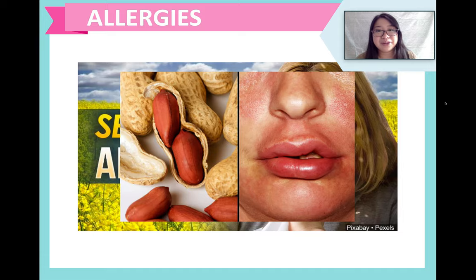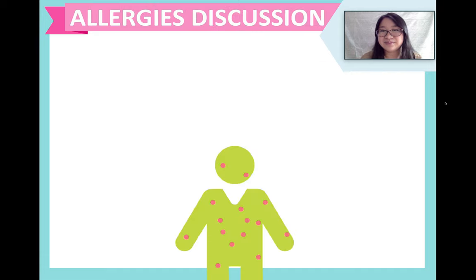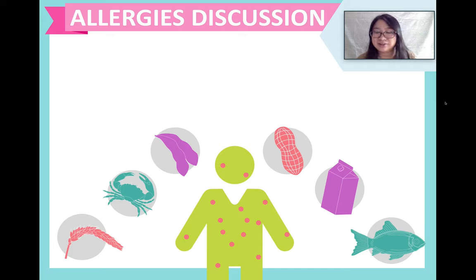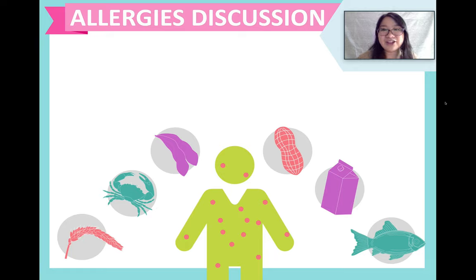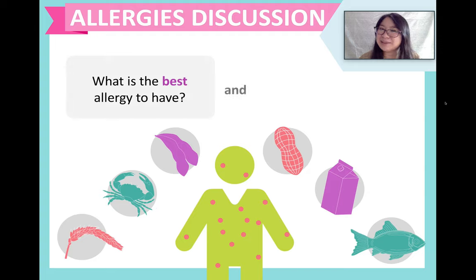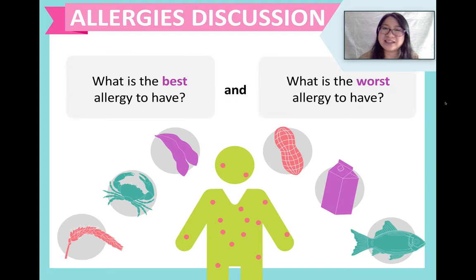For some people, a peanut allergy could even kill them because they can't breathe anymore. Do you know anyone with a food allergy? There are actually many different kinds of allergies. We have food allergies like peanuts, fish, and milk; plant allergies like grass or wheat; medical allergies — maybe you're allergic to certain medications; or animal allergies, like cats or dogs. So in your opinion, what is the best allergy to have? And what is the worst allergy to have?